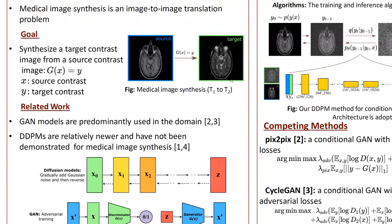In principle, medical image synthesis can be seen as an image-to-image translation problem, which is widely investigated in the computer vision domain. The goal is to synthesize a target modality image given a source modality image. This can be formulated as G(x) goes to y, where x is the source modality image and y is the target modality image.